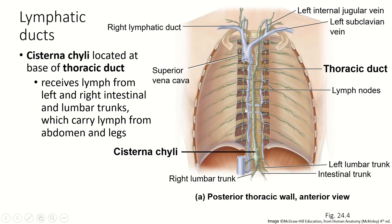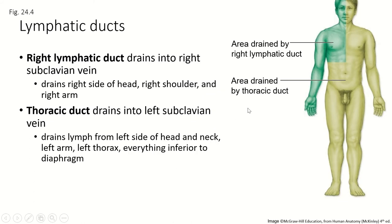At the base of the thoracic duct, the trunks bringing lymph from the legs and the abdominal-pelvic cavity dump into the cisterna chyli. A cistern is like a water tank, and chyli refers to chyle, so this is a place to collect that chyle and other lymph before it gets carried up through the thoracic duct. Because we only have two lymphatic ducts, they drain very specific parts of the body: the right lymphatic duct drains the right side of the head and neck, the right arm, and the right upper quadrant of the trunk, while the thoracic duct drains the rest of the body.